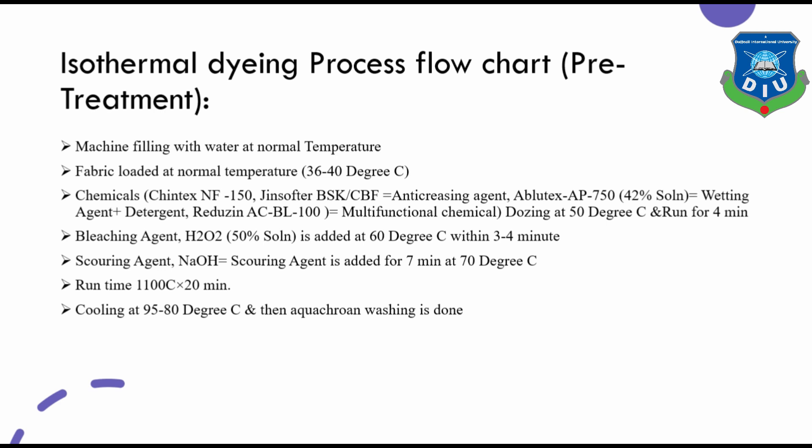For pre-treatment: first, machine filling with water at normal temperature. Then fabric is loaded at 36 to 40 degrees centigrade. Then add chemicals: Syntex N150 (an anti-creasing agent), Avaltex AP750 (a wetting agent plus detergent), and Reduzine (a multifunctional chemical). Dosing at 50 degrees centigrade, run for 4 minutes. Then add bleaching agent H₂O₂ 50% at 60 degrees centigrade within 3 to 4 minutes. Then add scouring agent sodium hydroxide at 70 degrees centigrade for 7 minutes. Then run at 110 degrees centigrade within 20 minutes, then cool to 95–80 degrees centigrade, and hot washing is done.